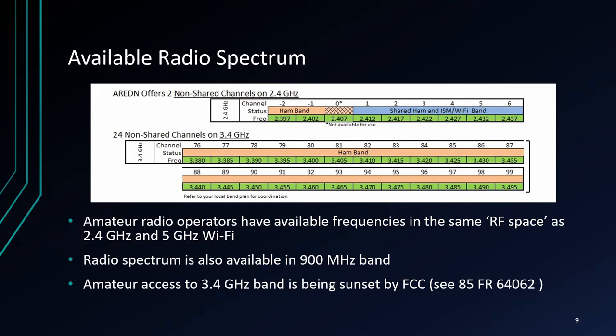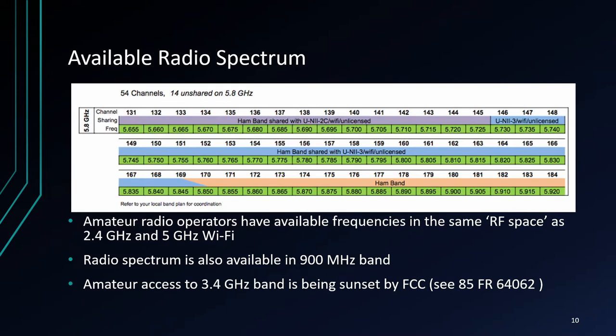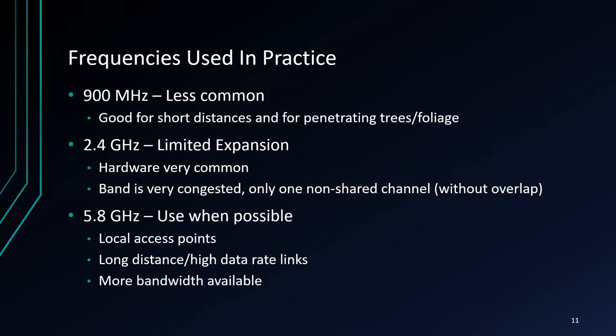In the 2.4 GHz band, only one channel — channel negative 2 — is available for ham radio use that does not overlap with shared frequencies. Channel negative 1 overlaps slightly with the shared frequency space and is therefore often avoided in mesh use. Many more unshared channels are available in the 5 GHz band. Because the FCC is sunsetting amateur radio access in the 3.4 GHz band, I would avoid buying devices for use in that band. In practice, most new nodes should try to use the 5.8 GHz band, where more spectrum is available.